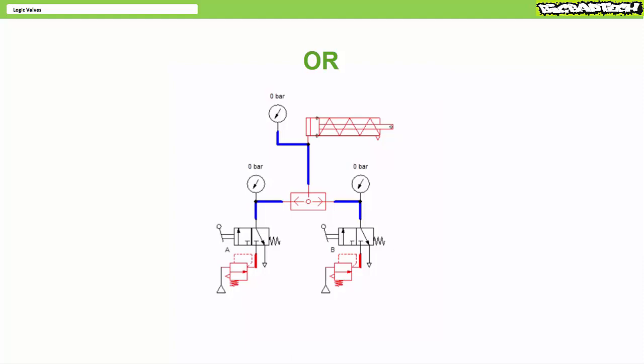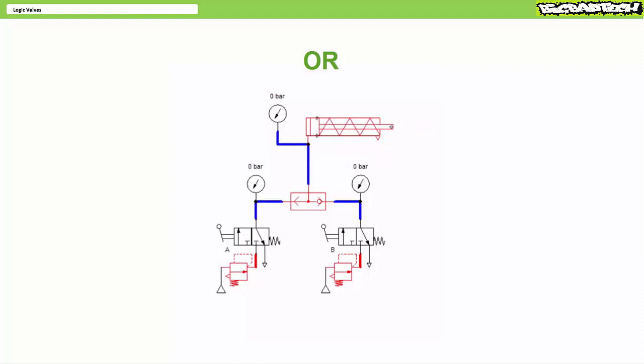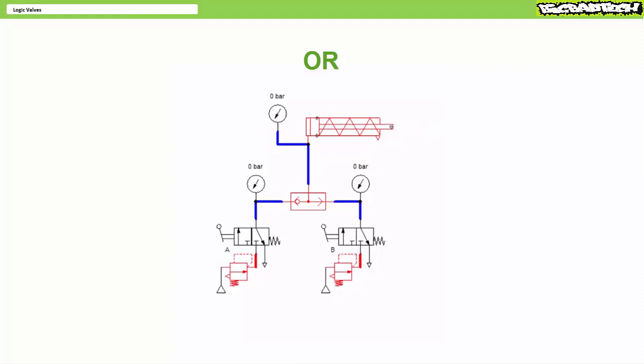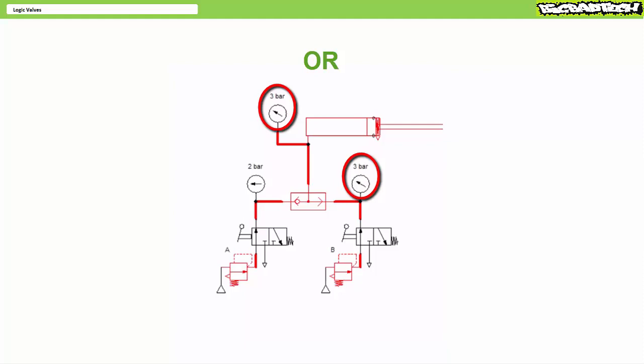When neither A nor B receive an air pilot signal, the OR valve produces no output. When only A receives an air pilot signal, the OR valve produces output. When only B receives an air pilot signal, the OR valve produces output. Finally, when both A and B receive an air pilot signal, the OR valve also produces output. You will note the OR valve selects the highest of the two pressures, notably B at 3 bar.